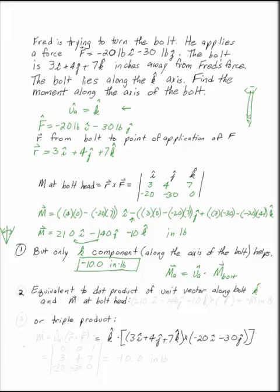So our unit vector is K. So if we take the dot product of M and K, 210I minus 140J, minus 10K, and the dot product, our unit vector is just K because our bolt is in the K direction. That gives us the minus 10 inch pounds that we had before.